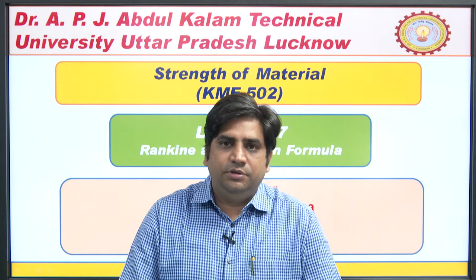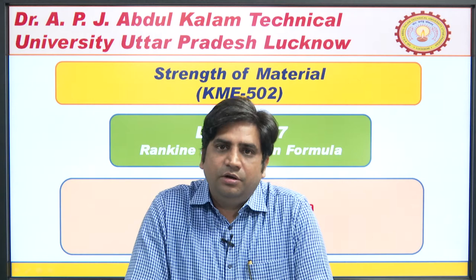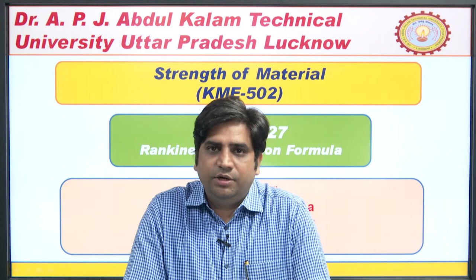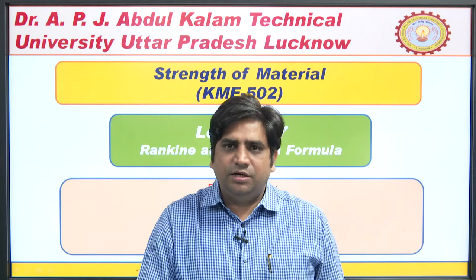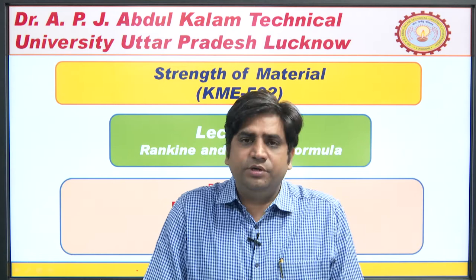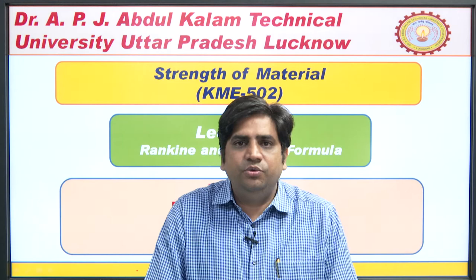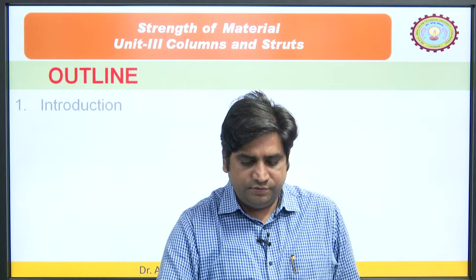This is the last topic of the third unit in this lecture. By now you should know how many types of columns there are, what end conditions exist, and how we calculate the Euler crippling load using the standard formula. These are the prerequisites. In this lecture we are going to discuss the Rankine and Gordon formula — an advanced modification of the Euler formula — and also address the limitations of Euler's formula.